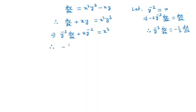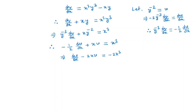So we have minus one-half dv/dx plus xv equals x³. By simplifying, we get dv/dx minus 2xv equals minus 2x³. This is a first-order linear equation, and we solve this kind of equation by the integrating factor method.